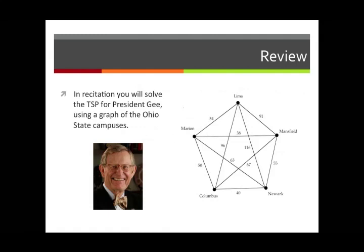In your recitation, you're going to solve the traveling salesman problem for the president of Ohio State — the retired president, President Gee. This problem is based on a graph of the Ohio State campuses, as shown on the right. It shows the five campuses and the distances between them. This is a complete weighted graph.